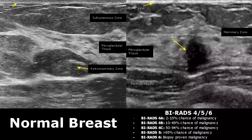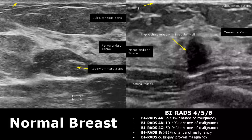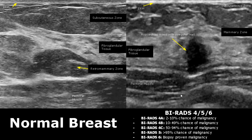Now we move on to BI-RADS categories which have a chance of malignancy. BI-RADS 4 has three subcategories: in 4A the chance of malignancy is 2 to 10 percent, 4B is 10 to 49 percent, and 4C is 50 to 94 percent. BI-RADS 5 has greater than 95 percent chance of malignancy, and BI-RADS 6 is a biopsy-proven malignancy.